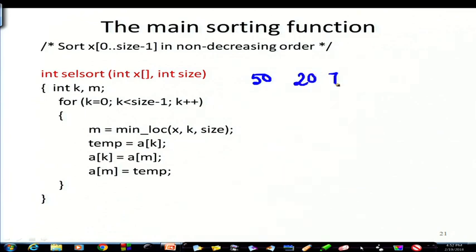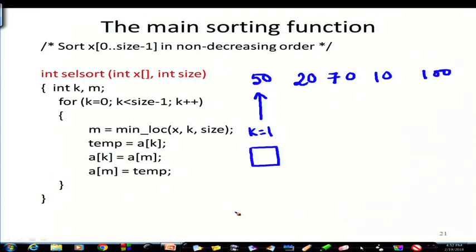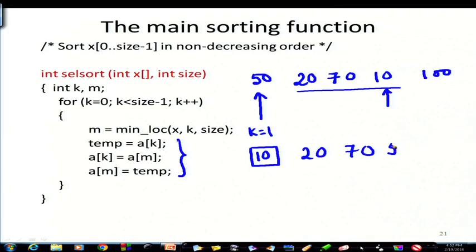For example, suppose the array is 50, 20, 70, 10, 100. With k equal to 0, we search for the minimum from here and find 10 to be the minimum. We swap: 10 comes to position 0 and 50 goes to position 3. The array becomes 10, 20, 70, 50, 100. Then k is incremented.